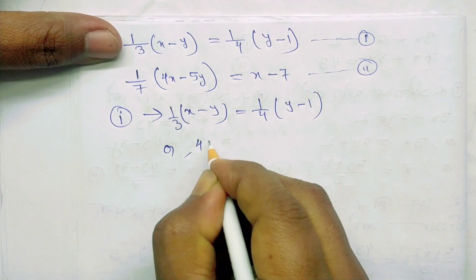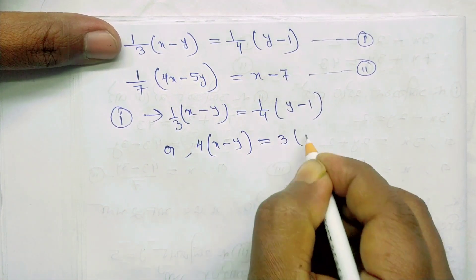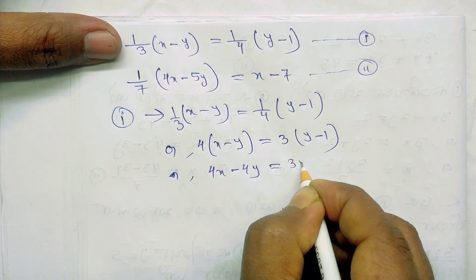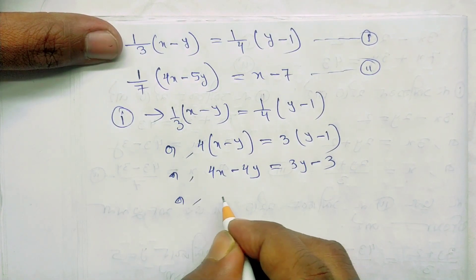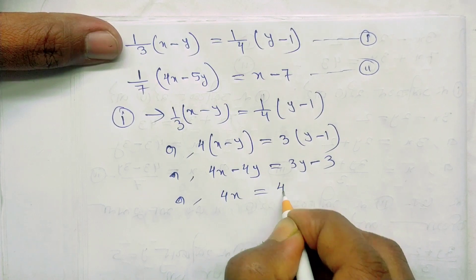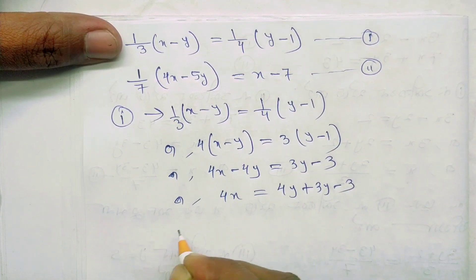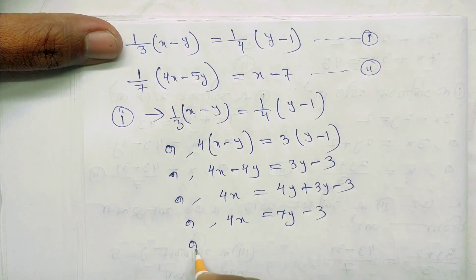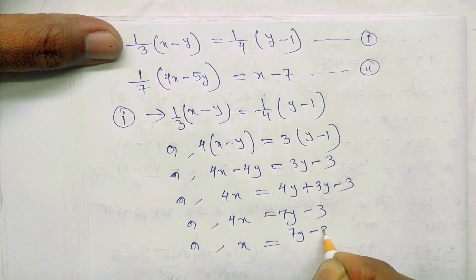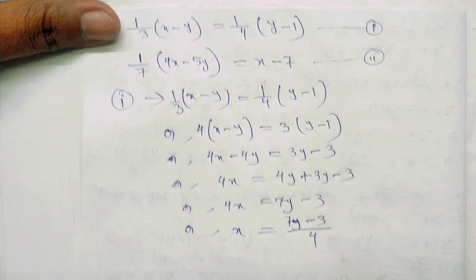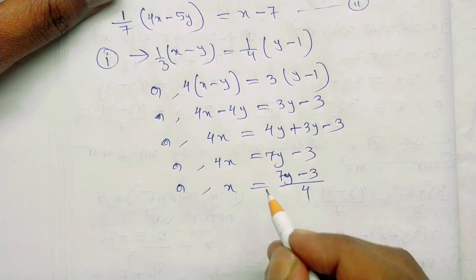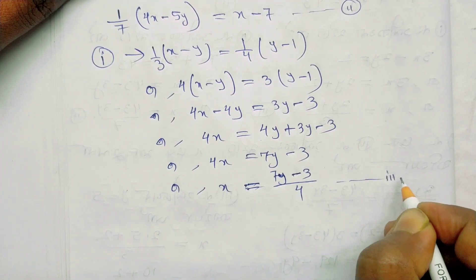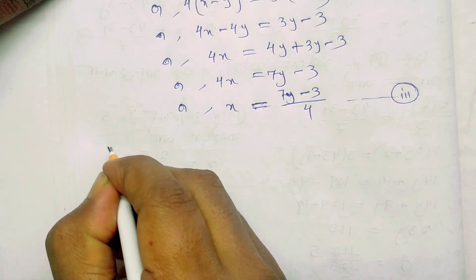4 into x minus y equals 3 into y minus 1. So 4x minus 4y equals minus 3. Then 4x minus 4y plus 3y minus 3. So 4x minus y minus 3. Then x equals 7y minus 3 over 4. This is equation number 3. This is equation number 2.